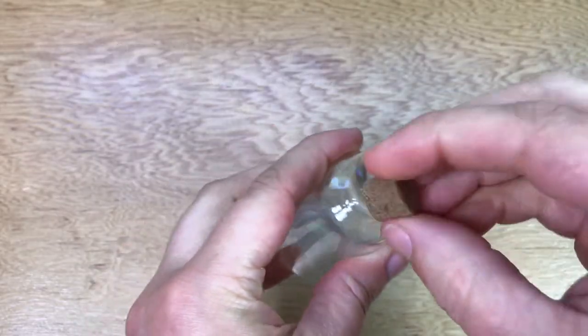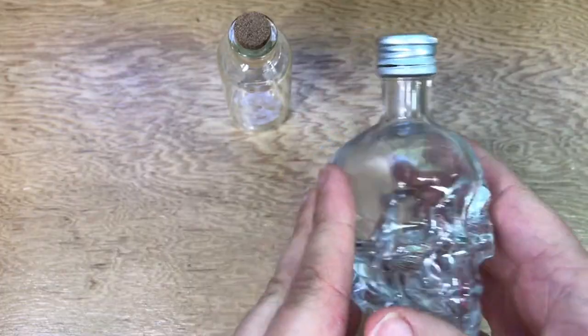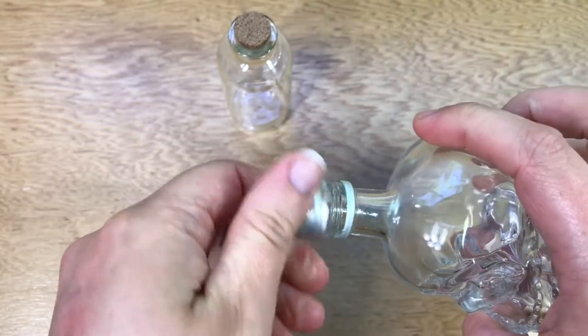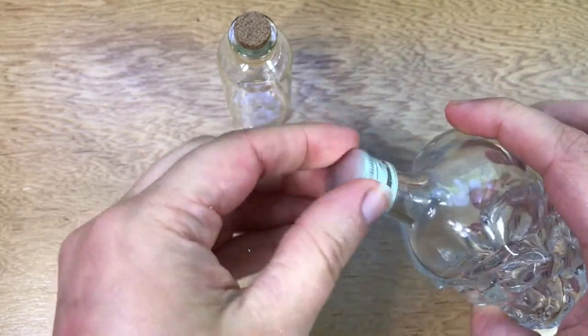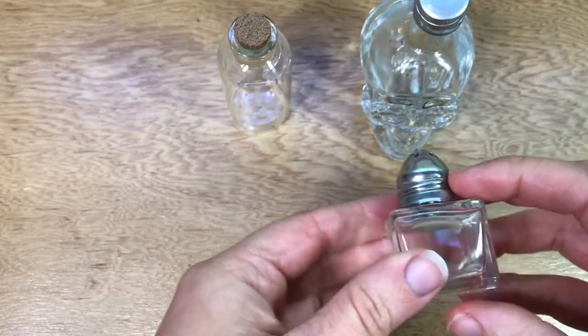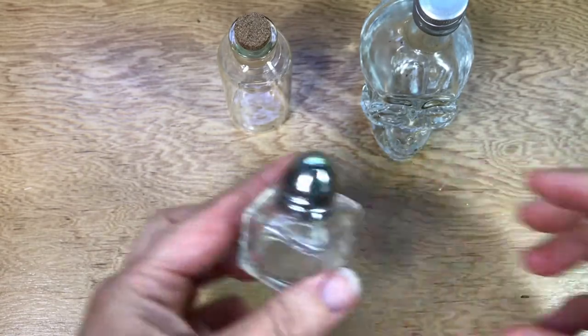I have this glass bottle with a cork lid. This mini alcohol bottle that is in the shape of a skull with a metal lid. And lastly a mini salt and pepper shaker.